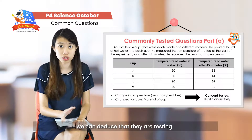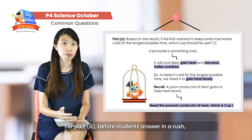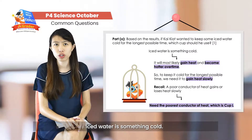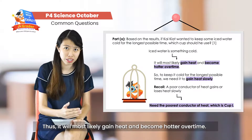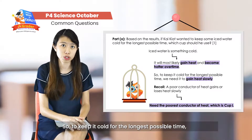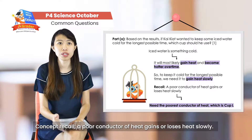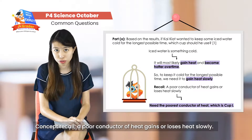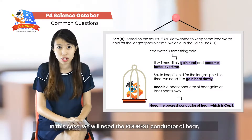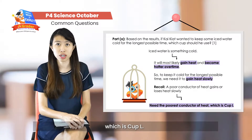So we can deduce based on these two variables that they are testing on heat conductivity of materials. For part A, before students write their answer in a rush, they have to stop and think. Since ice water is something cold, ice water will gain heat and become hotter over time. To keep it cold for a longer period of time, we need it to gain heat slowly. You must have concept recall: a poor conductor of heat will gain heat and lose heat slowly. So in this case, we will need a poor conductor of heat, which based on the results is cup L.